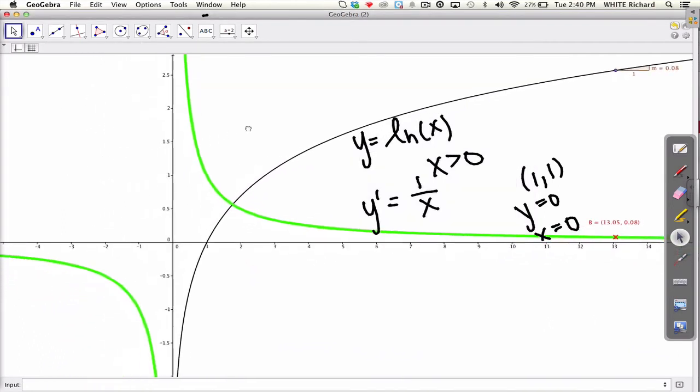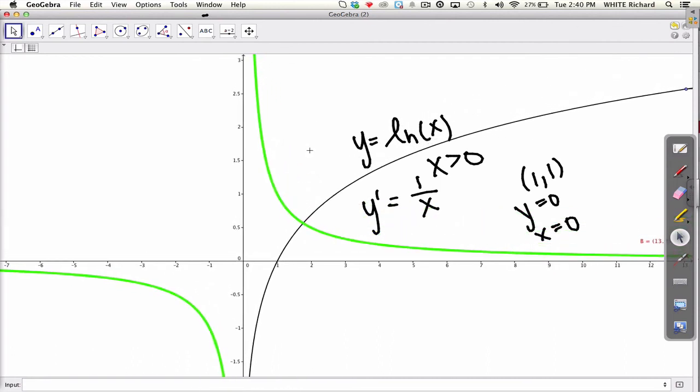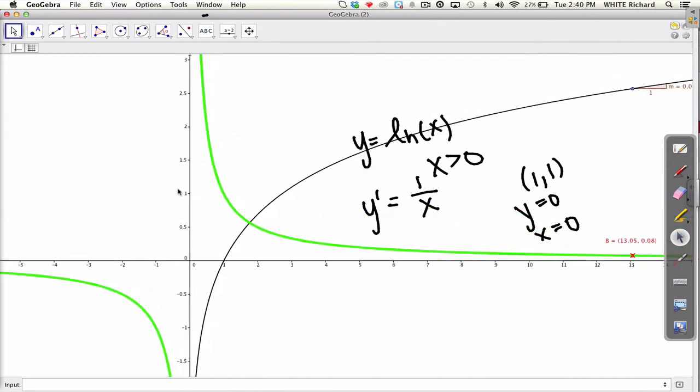But wait a minute. We've got an issue. What's going on over here? 1 over x is all the way over here as well, which means we need to restrict. Since the function was restricted to greater than 0, the derivative also has to be restricted to greater than 0. So that's our derivative of ln(x) is 1 over x.